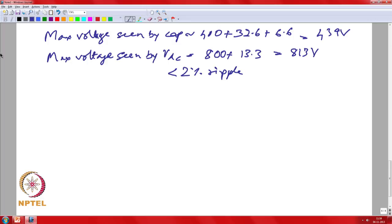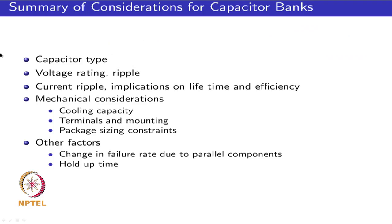Looking at the overall design of the DC bus capacitor bank: the first thing to decide is the type of capacitor. In a voltage source inverter, an electrolytic capacitor on the DC bus is common. People have started looking at very high reliability inverters where electrolytic capacitors might be eliminated and polypropylene capacitors used instead, though their capacitance value is quite small and a large bank would be needed. The voltage rating from both DC and ripple perspectives is important. The current ripple has implications on life and efficiency. If you are tight on these two factors, one might consider adding more capacitors in parallel.